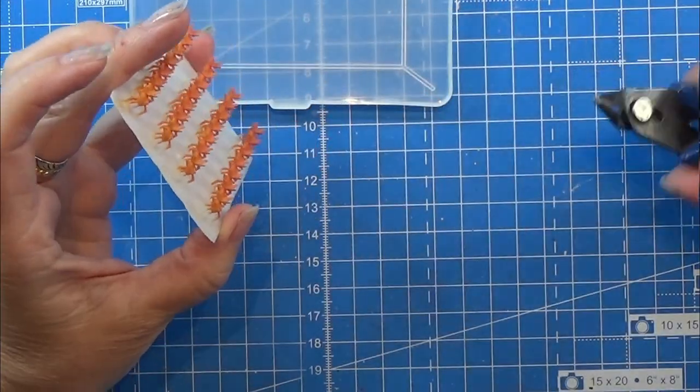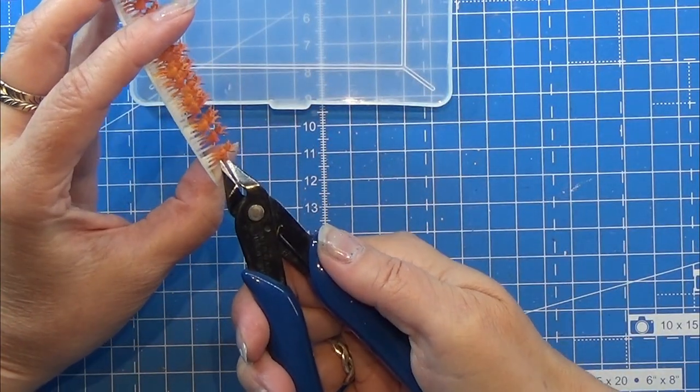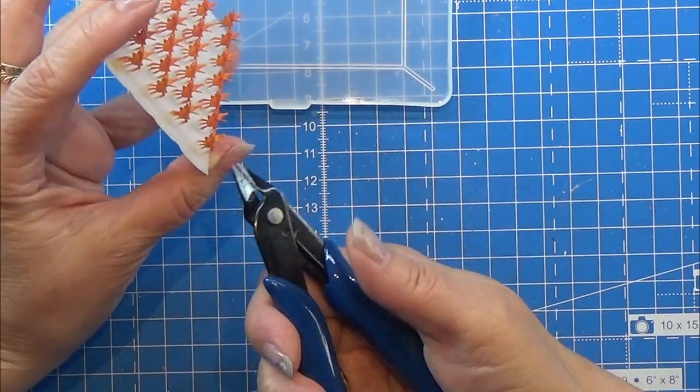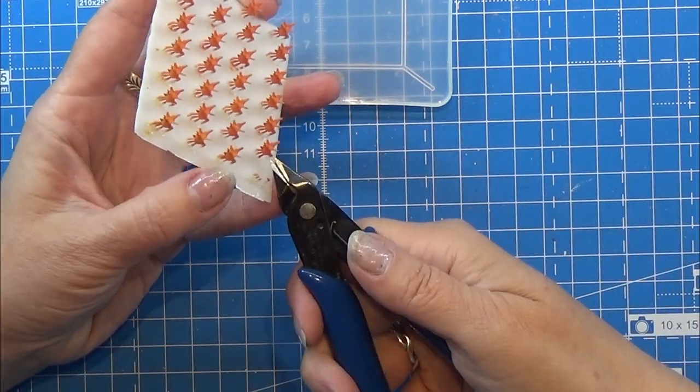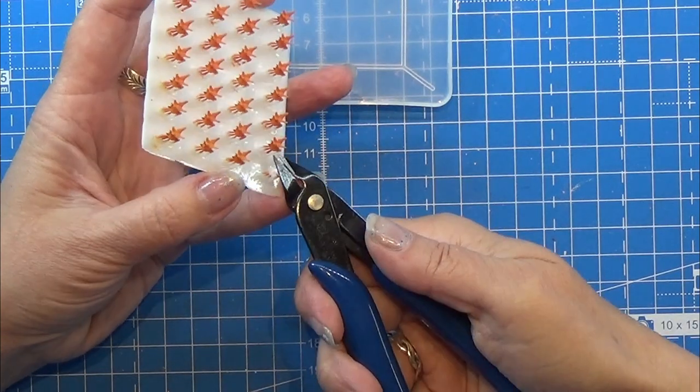When they all have been painted and they are all dry I am using a flush cutter here to cut them loose of the support and I am just taking my time so that I don't break anything at all.